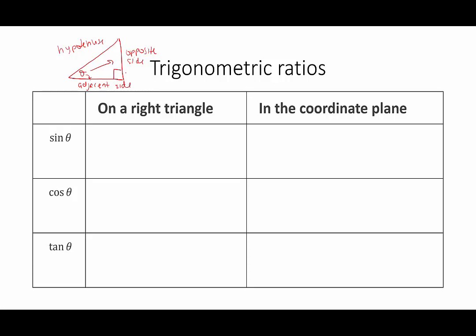When we look at an acute angle of a right triangle, these ratios are always the same — usually irrational, so we frequently use calculators or focus on special angles. Sine of theta is the ratio of the opposite side length over the hypotenuse. Sine is spelled S-I-N-E, and it's a function where the input is the angle measure theta. We abbreviate it as sin theta equals opposite over hypotenuse.